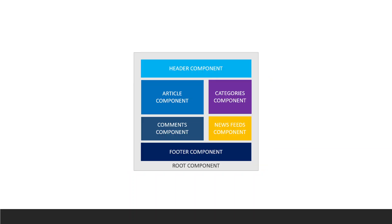Here's a slightly more colorful version. You have a header, a footer, an article component on the top left, a comments component right below it, then a categories component and a newsfeed component. Basically all of these live inside of a root component. Our app root is our root component — that's where the entire application lives.